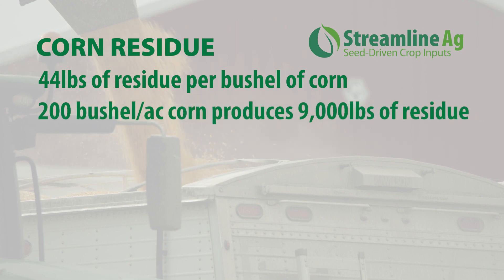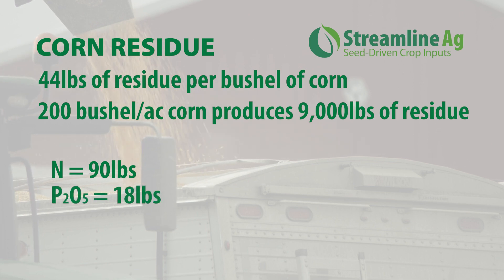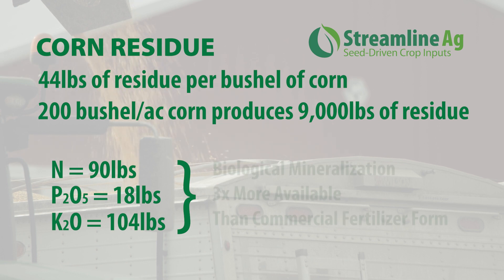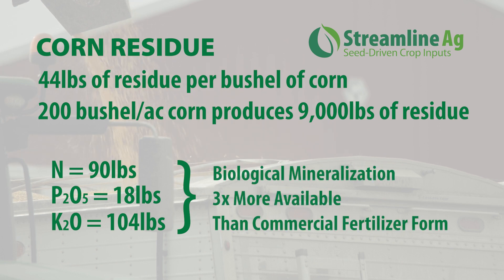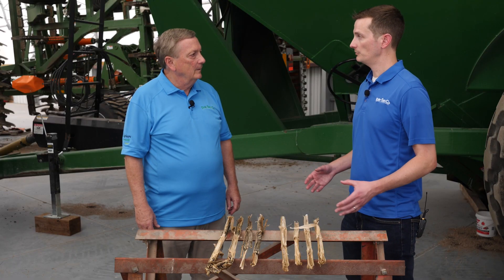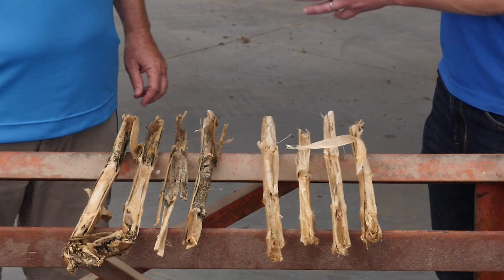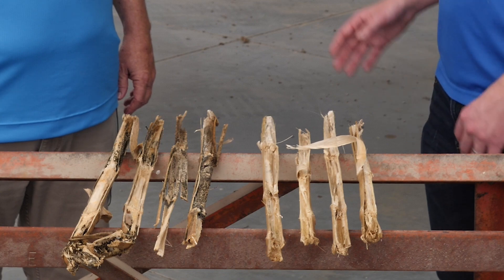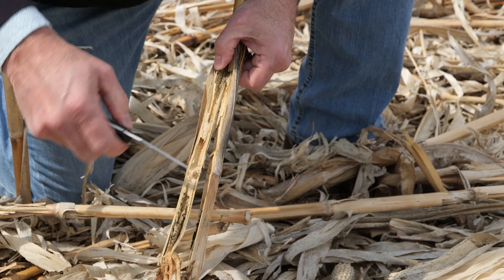But that's really only two thirds of the equation, because there are a lot of nutrients tied up in that residue. Picture a 200-bushel corn crop — that's 9,000 pounds of residue. Within that 9,000 pounds, there are 90 pounds of N, 18 pounds of P2O5, and 104 pounds of potash. The sooner you can make that available for the crop, the sooner it can utilize it and benefit from it. This residue will break down over time, but if it breaks down too late — during dent or later in the year — you're not getting any benefit. If you can get a portion to break down early enough, especially around that V5 period when the plant is establishing its yield potential, you'll really maximize what you get out of that field.